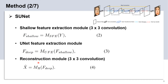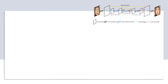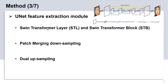We are going to illustrate the components of the body network, which is the U-Net feature extraction module. For the body network, there are mainly three important elements: Swin Transformer Layer (STL) and Swin Transformer Block (STB), Patch Merging down-sampling, and the proposed dual up-sampling. Next, we are going to introduce them one by one in detail.